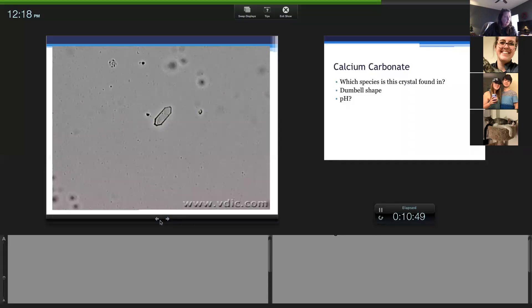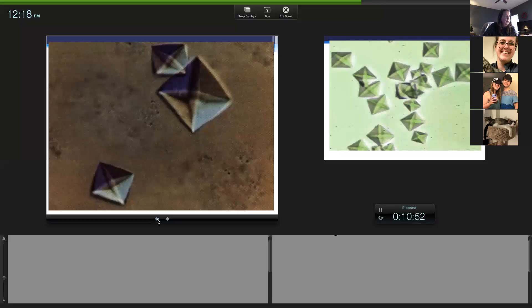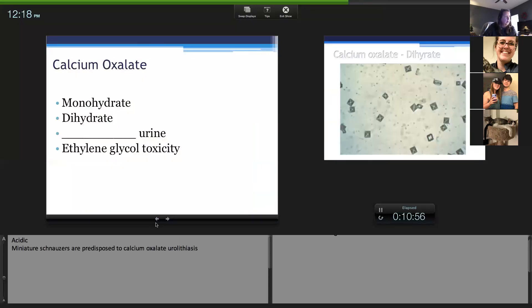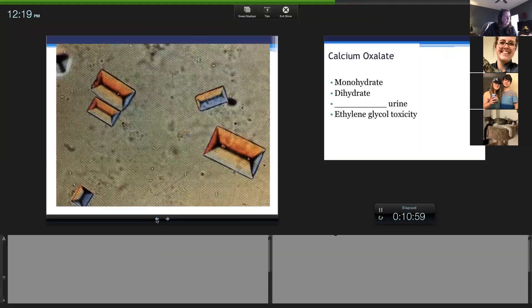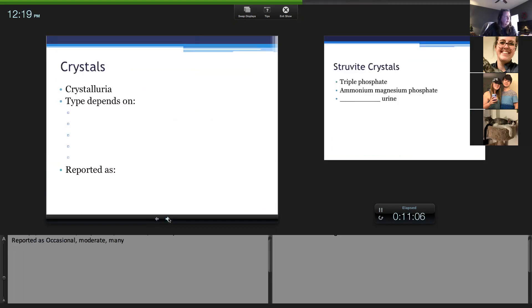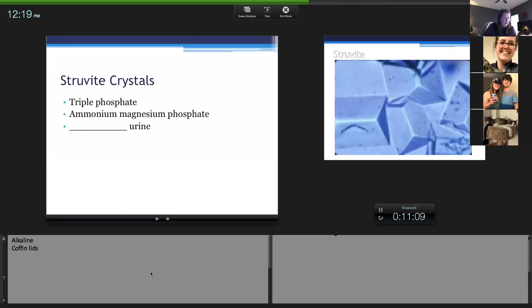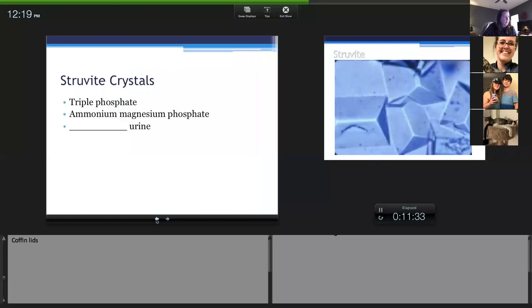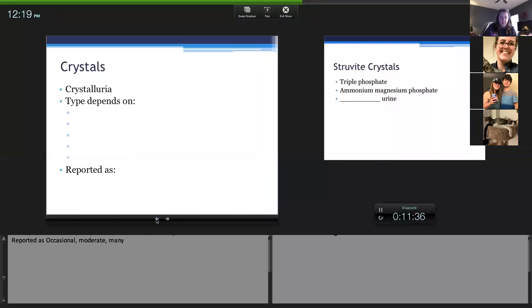This crystal is known as magnesium ammonium phosphate or triple phosphate. This would be your struvite crystals. Struvites can be triple phosphate versus ammonium phosphate, but this is also alkaline. These are the coffin lids and they're probably the most common crystal. This would be your struvite. Is there a question on the crystals?